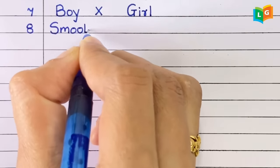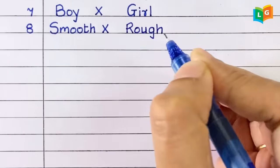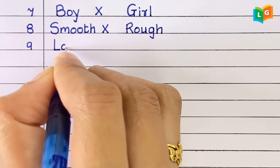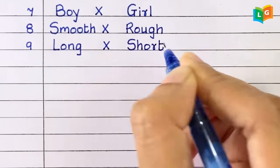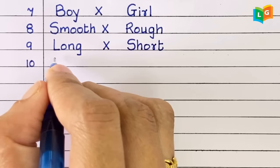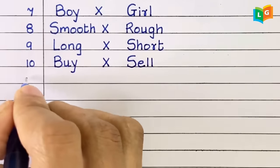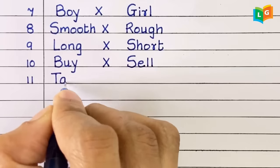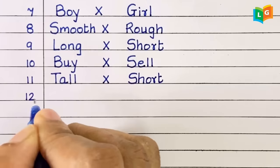Eight, smooth, rough. Nine, long, short. Tenth, buy, sale. Eleventh, tall, short.